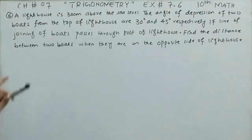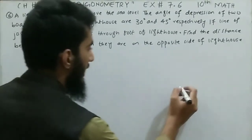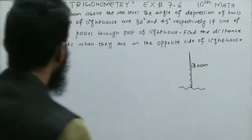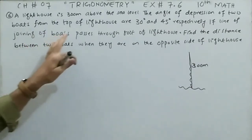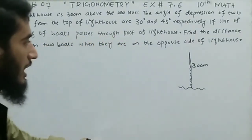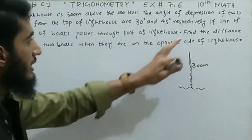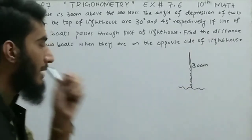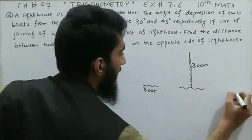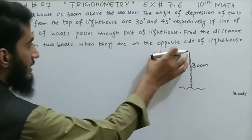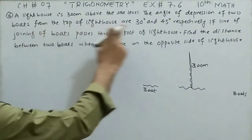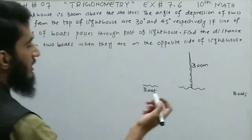Question number 6: A lighthouse is 300 meters above the sea level. The angle of depression of two boats from the top of the lighthouse are 30 degrees and 45 degrees respectively. If the line joining the boats passes through the port of the lighthouse, find the distance between the two boats when they are on opposite sides of the lighthouse. One boat is on one side, the second on the other side — opposite sides.